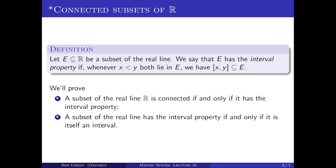The word 'interval' here includes infinite intervals (unbounded on the left, right, or both) and endpoints can be open or closed. For example, (0,1] is an interval, the set of reals strictly greater than 2 is an interval, and the set of reals greater than or equal to 2 is an interval. Putting those two statements together gives the theorem that the connected subsets of the real line are precisely the intervals.